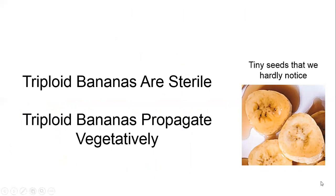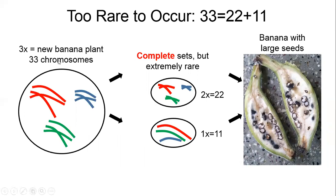So triploid bananas are sterile — they don't make proper seeds. How do triploid bananas propagate? They propagate vegetatively, not through seeds, but through little plants called pups or suckers that grow at the base of the main stem, and these little plantlets give rise to new banana plants. You may ask why 33 doesn't split into 22 plus 11. Theoretically that would be possible, but practically it's so rare that it doesn't happen — statistically it's so rare to divide 33 chromosomes to give a complete set of 22 and a complete set of 11, which is why modern-day bananas would never have a big seed like the original banana.